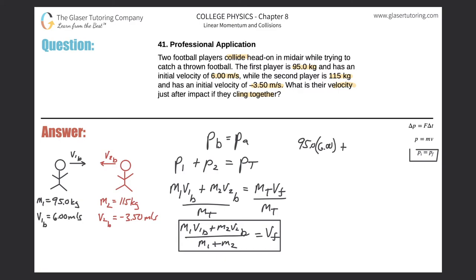Plus then the second mass is 115 multiplied by that velocity moving in the opposite direction, therefore it's going to be negative 3.50. And this is all then divided by the total mass, so it's 95 kilograms for the first player plus 115 kilograms for the second player. And remember, this will all equal the final velocity.